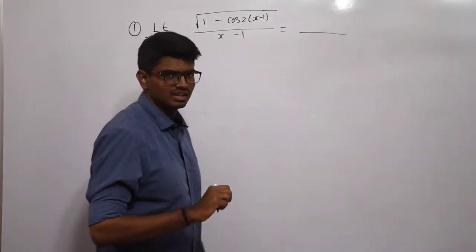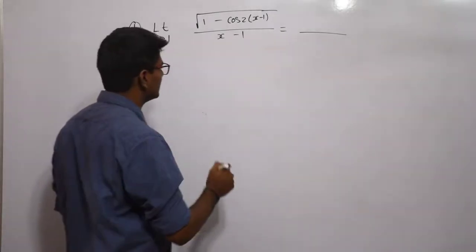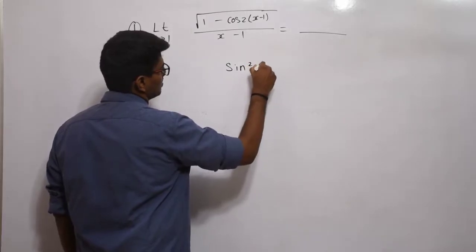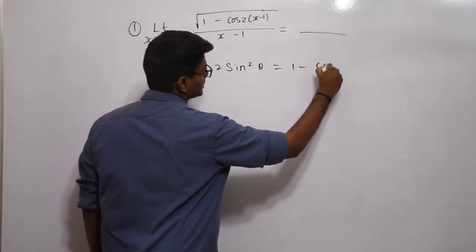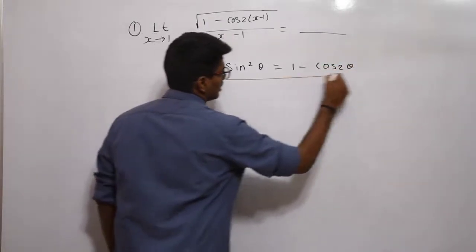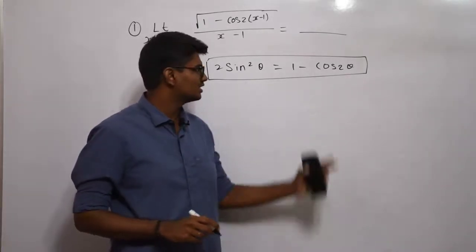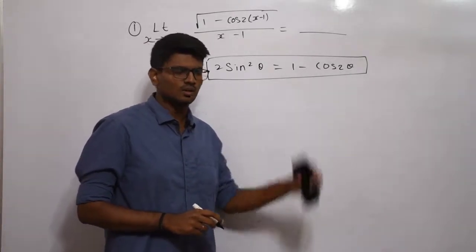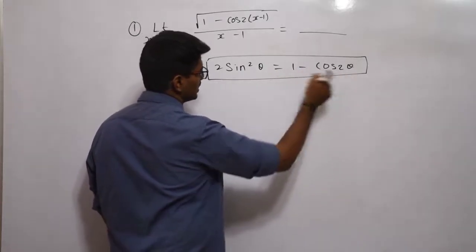When I was discussing the basic trigonometry video lecture, I mentioned a formula for sin square theta. If you remember, it is: 2 sin squared theta equals 1 minus cos 2 theta. If you are not aware of this, go back to the basic video lecture and you will find this formula. 2 sin squared theta equals 1 minus cos 2 theta.